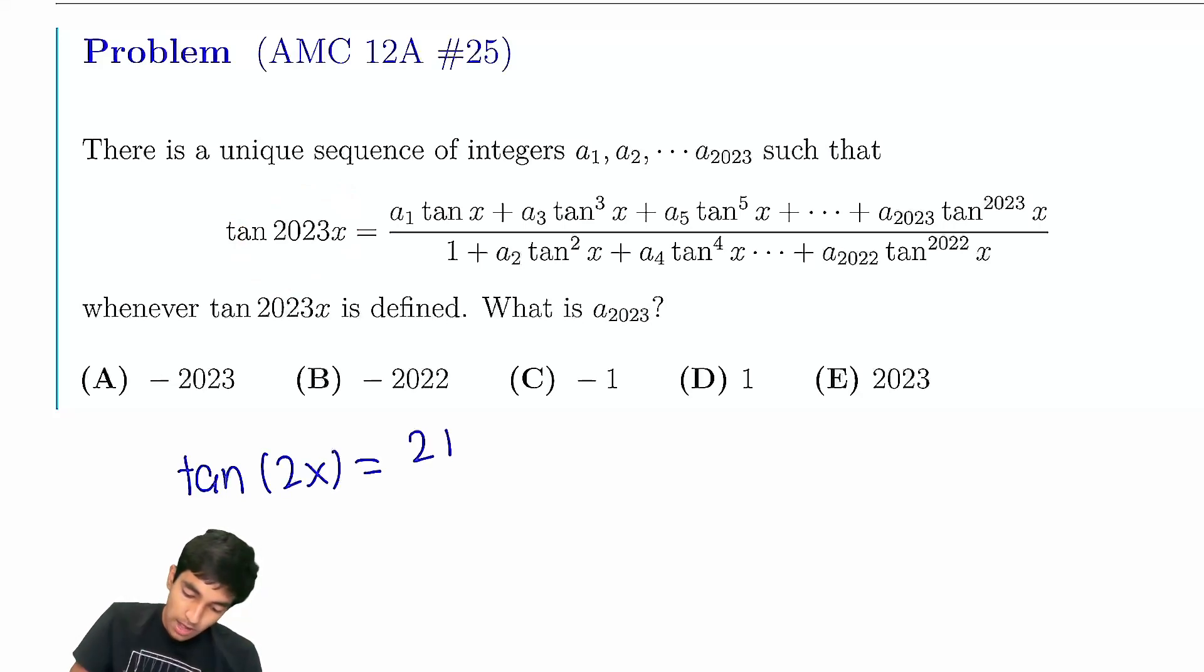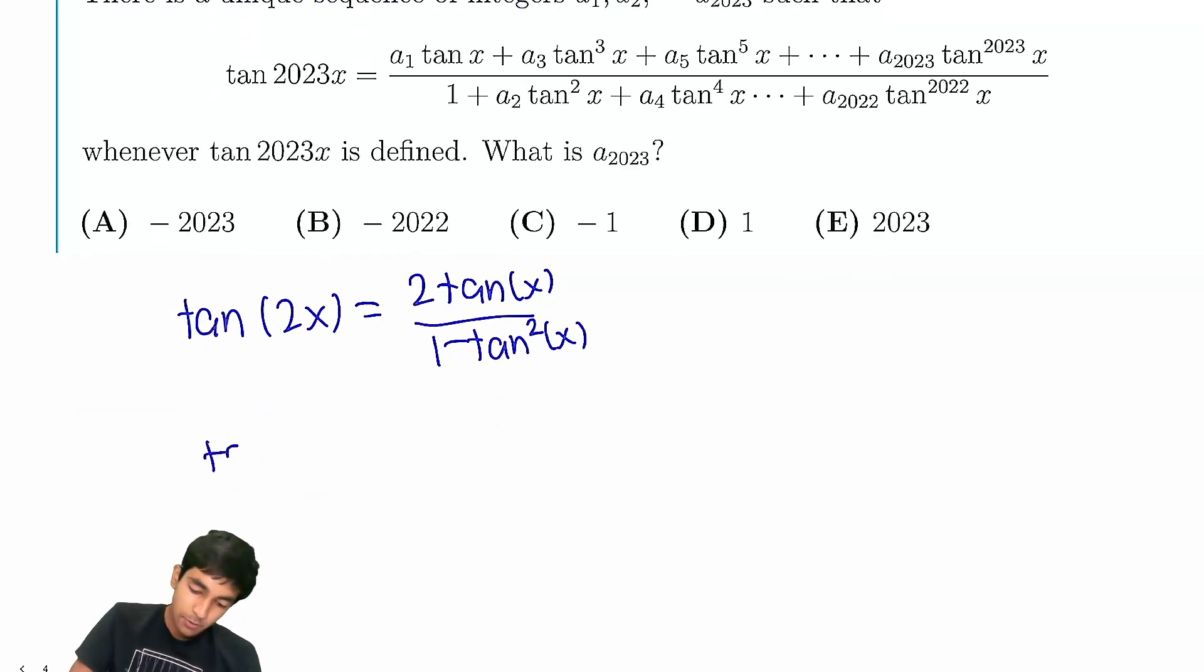We have tan of 2x, which is 2tan(x) over 1 minus tan^2(x), 1 minus tan(x) squared. And then we have tan of 3x. We can get 2tan(x). I'm just going to write t for short instead of writing tan(x) all over again. 2t over 1 minus t squared plus t over 1 minus 2t squared over 1 minus t squared.